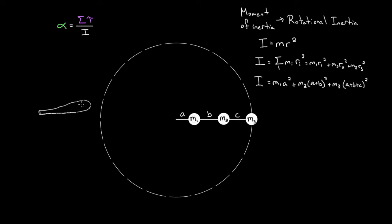Think about a baseball bat. If you swing it from the handle end where that's the axis, it's hard to rotate because you've got all the heavy mass at the far end. But if you turn it around and swing it from the fat end where that's the axis, most of the mass is now near the axis. The radius of that mass is smaller, so it contributes less to the moment of inertia. You can swing a baseball bat much faster holding it by the fat end — though you probably won't hit the ball very far.